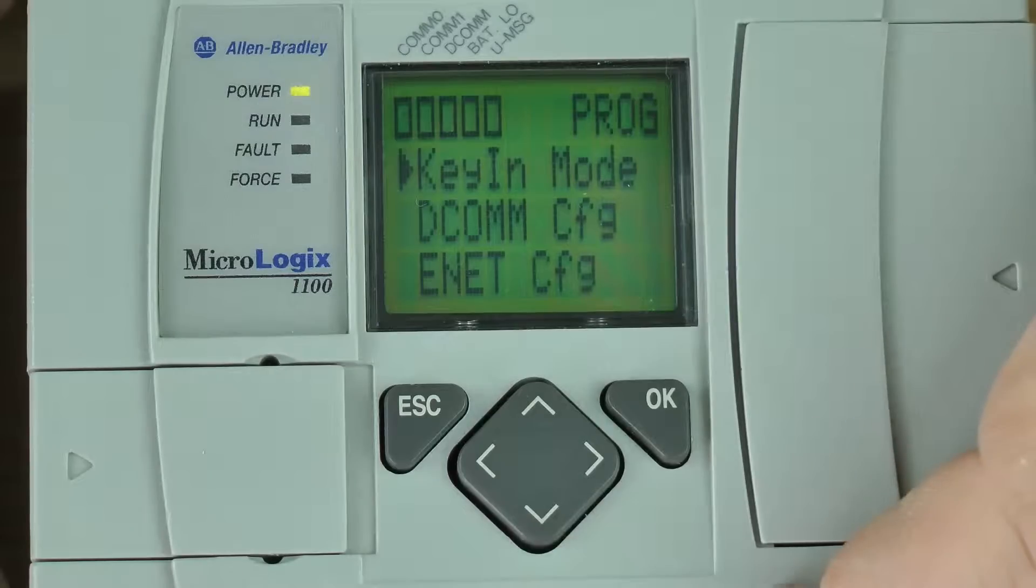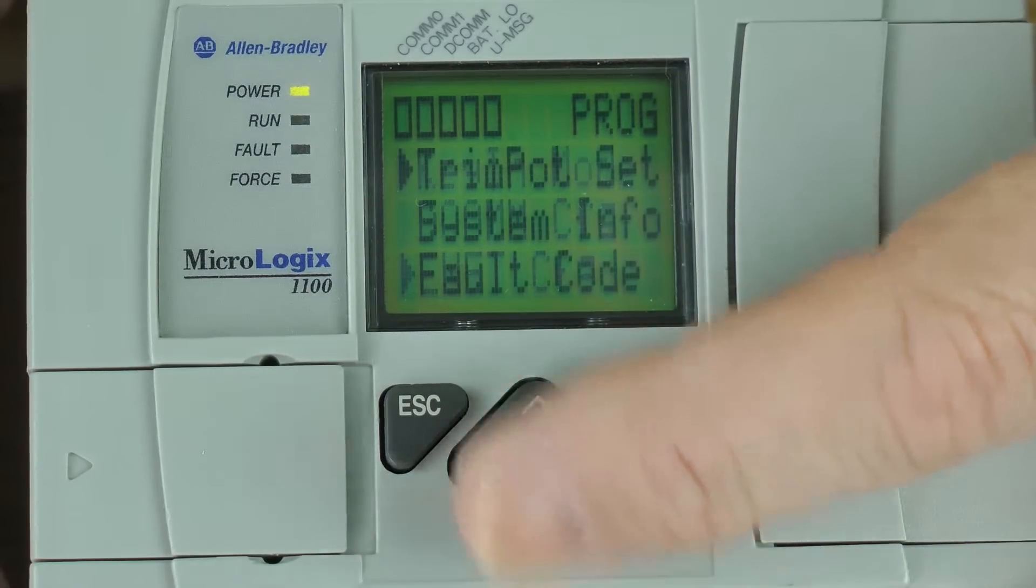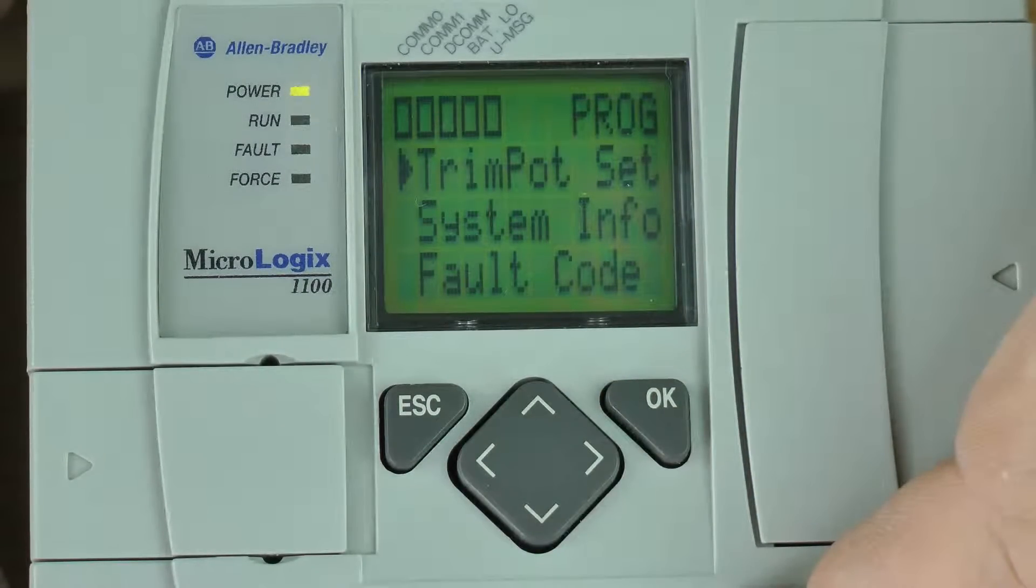Now from here, I have to select the down arrow key three times to select trim pot set and press the okay button.